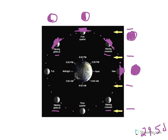Waxing crescent and waxing gibbous — the word waxing means getting bigger. So from new moon through waxing crescent, through first quarter, through waxing gibbous, all the way up to full, this whole portion of the moon's orbit, the amount of illumination is going to increase. And during this entire time, it is the right-hand side of the moon that is illuminated.